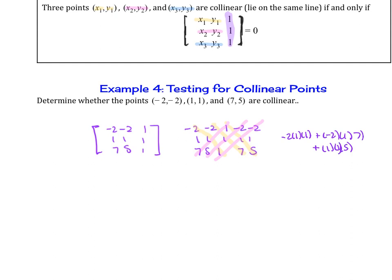And then we subtract, so minus 7 times 1 times 1 minus 5 times 1 times negative 2 minus 1 times 1 times negative 2. So you find that this is negative 2 minus 14 plus 5 minus 7 plus 10 and plus 2. And so you see that though that cancels, and then we get... So you get negative 16 plus 10, which is negative 6.